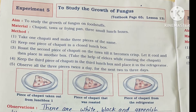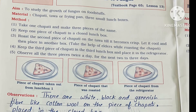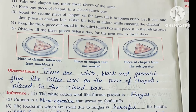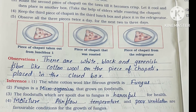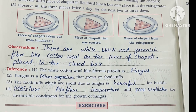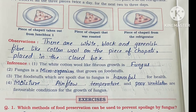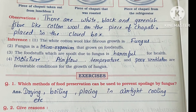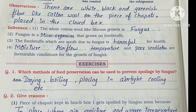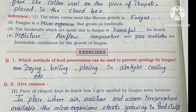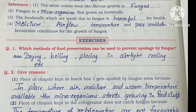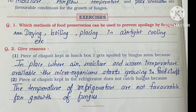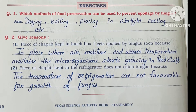Experiment number 5 is to study the growth of a fungus. There are white, black, or greenish color fibers like cotton wool on a piece of chapati or on items kept in a clothes box — this shows the growth of fungus. Some methods to preserve food and prevent fungal spoilage include drying, boiling, heating, placing in airtight containers, or cooling.